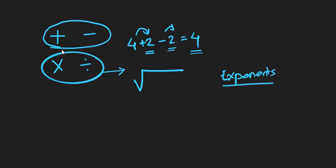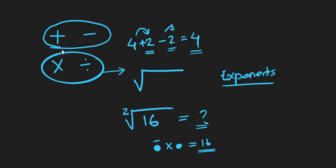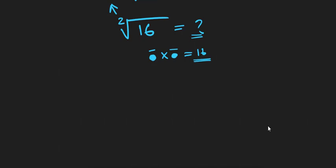So if I ask you what is the root of 16, it tells us what number we have to multiply by itself. What is the number we have to multiply to get the result 16, and how many times? Here the answer is two times. We know that if we multiply 4 two times, 4 times 4 equals 16. So the square root of 16 is equal to 4.